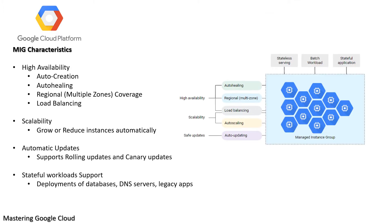MIG characteristics - High availability: If a VM in the instance group crashes, stops, or is deleted, the MIG automatically recreates that VM with the original instance specification, which means the same name and same template, so that the VM can resume its work.